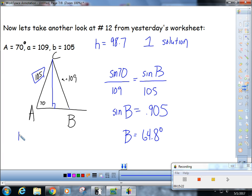So let's find big C by doing 180 minus 70 minus 64.8, and so that would be 45.2 degrees. So finally, we need to find little c.